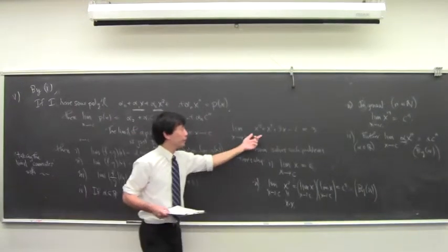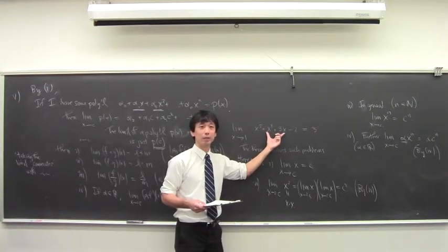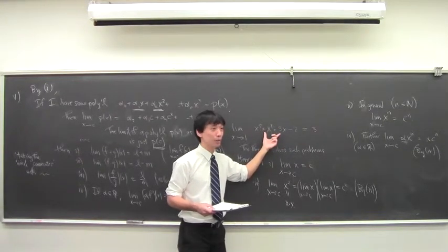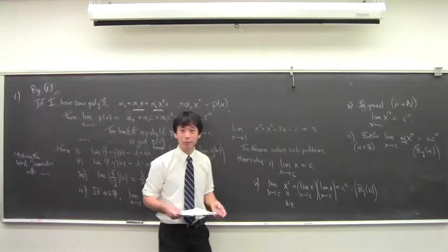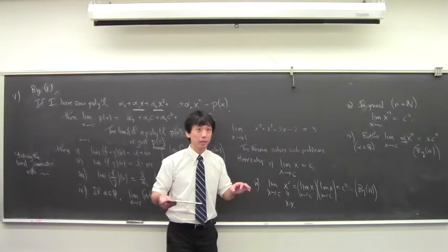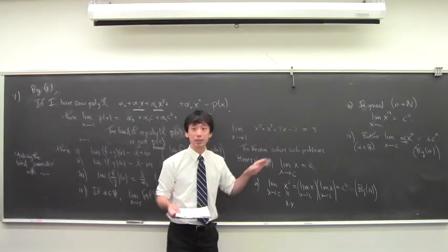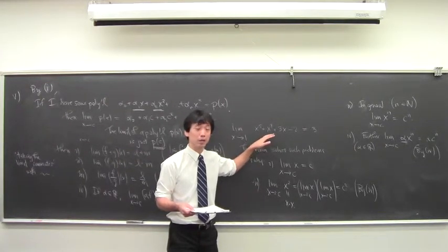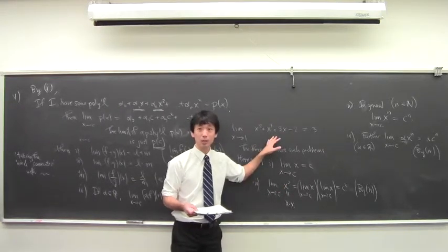So going back to the example — here's a polynomial. What's the limit as x approaches 1? You just evaluate it at 1, and you don't have to use epsilons and deltas. By the theorem, the limit of a polynomial is just the polynomial evaluated at that point. Polynomials are some of those functions where you can just evaluate them at the point to get the limit.